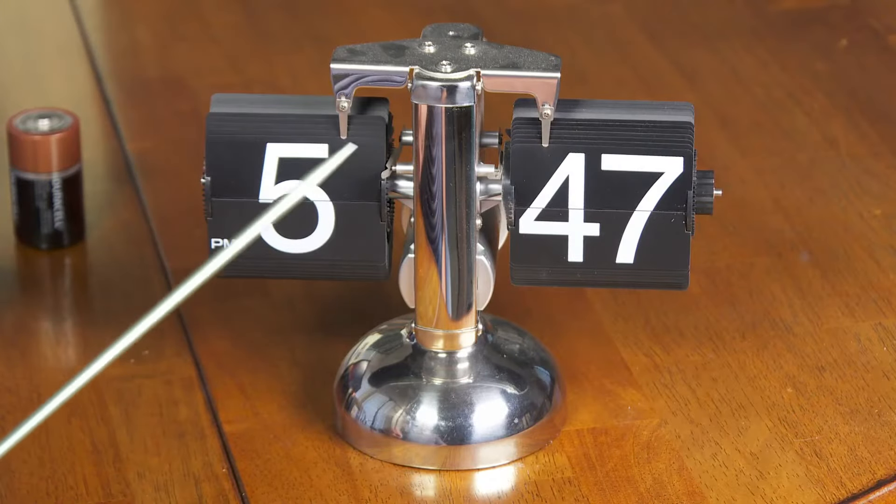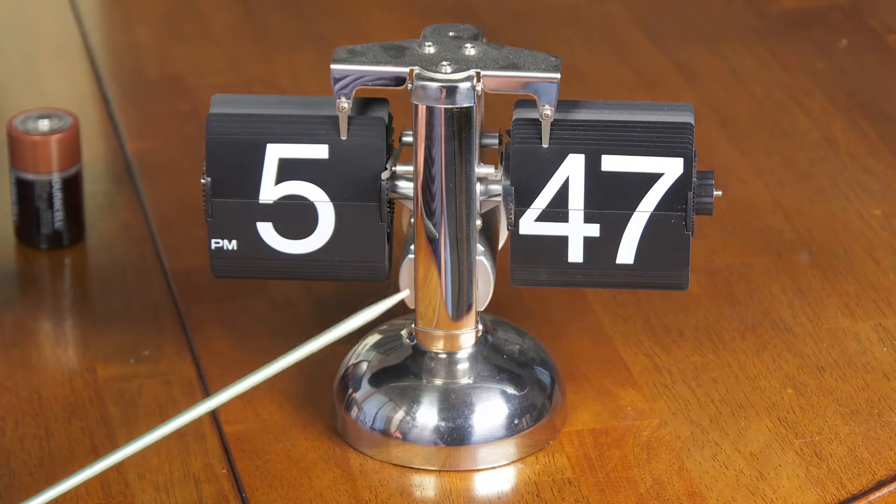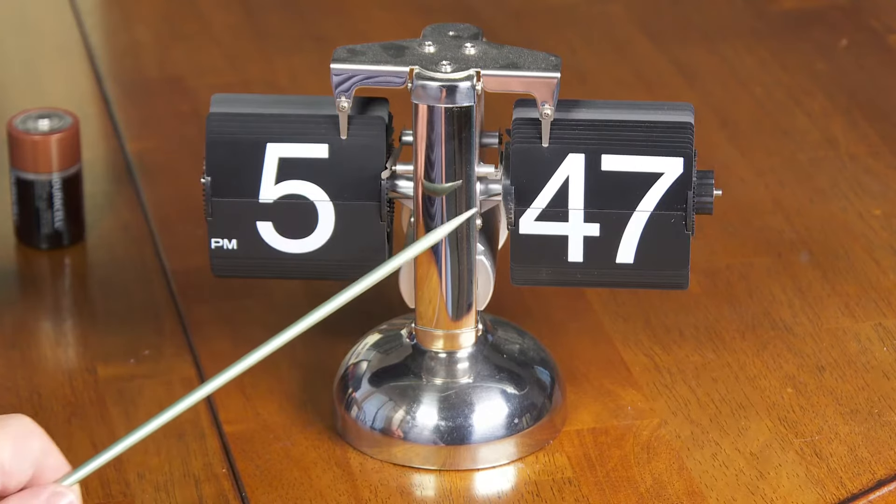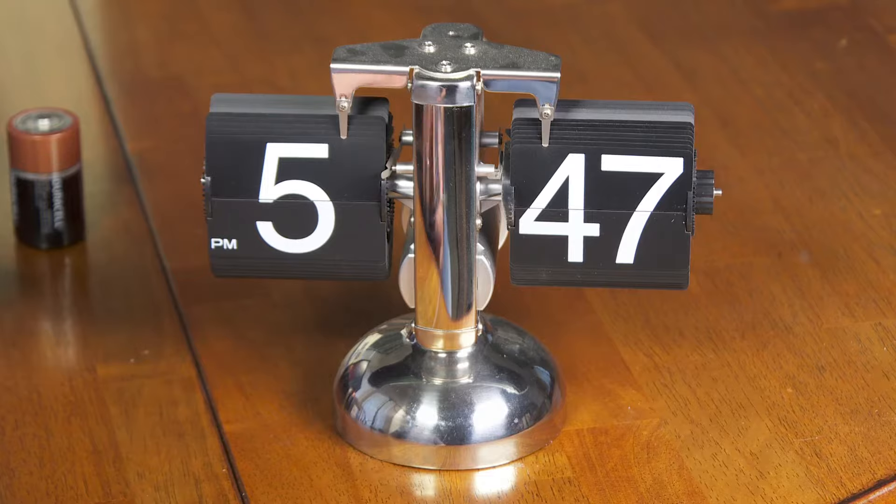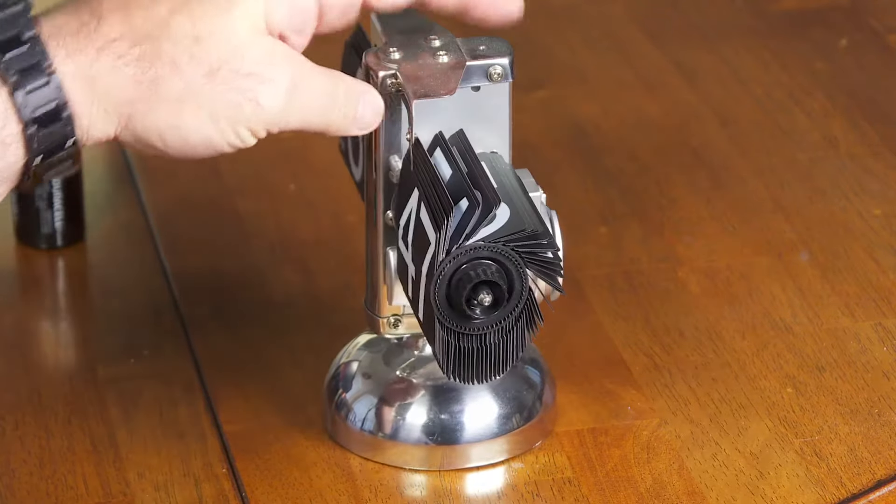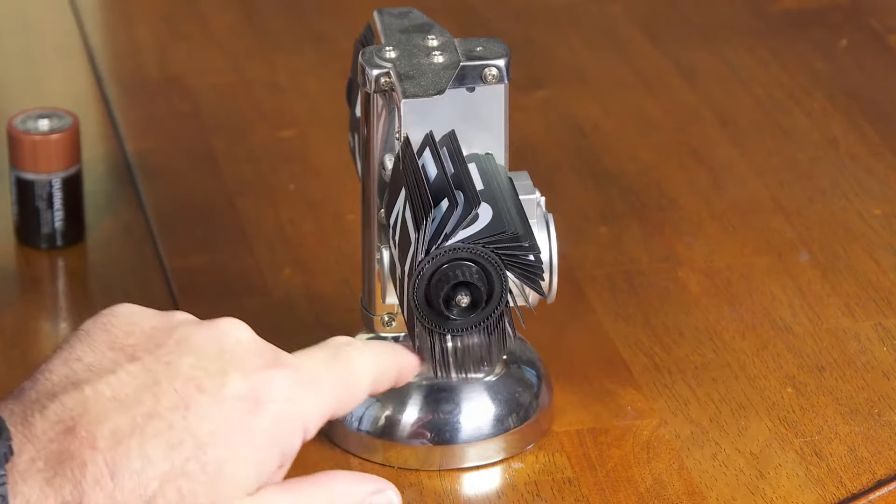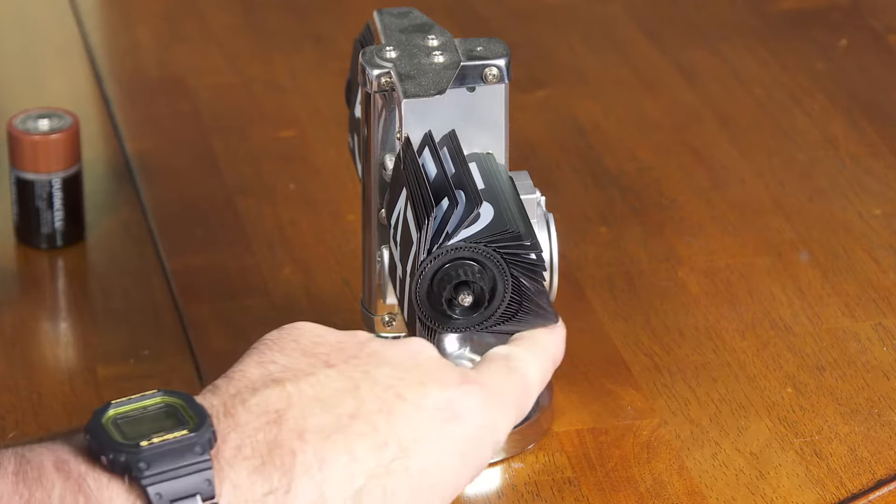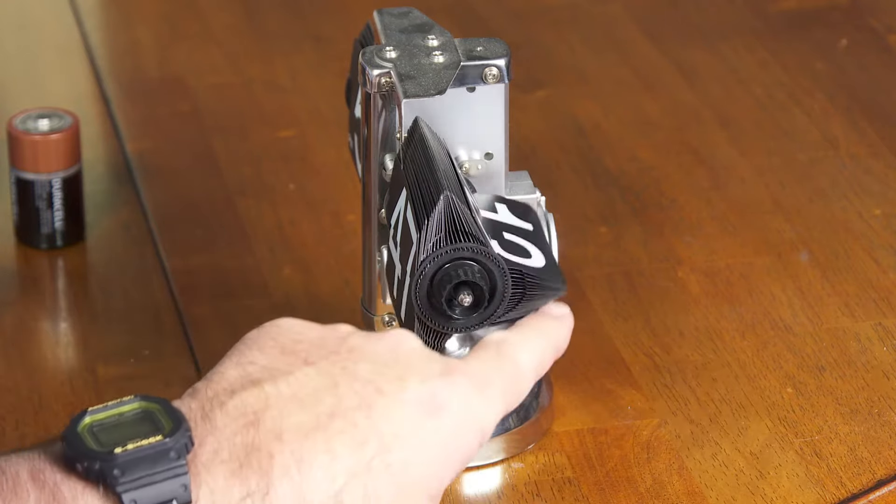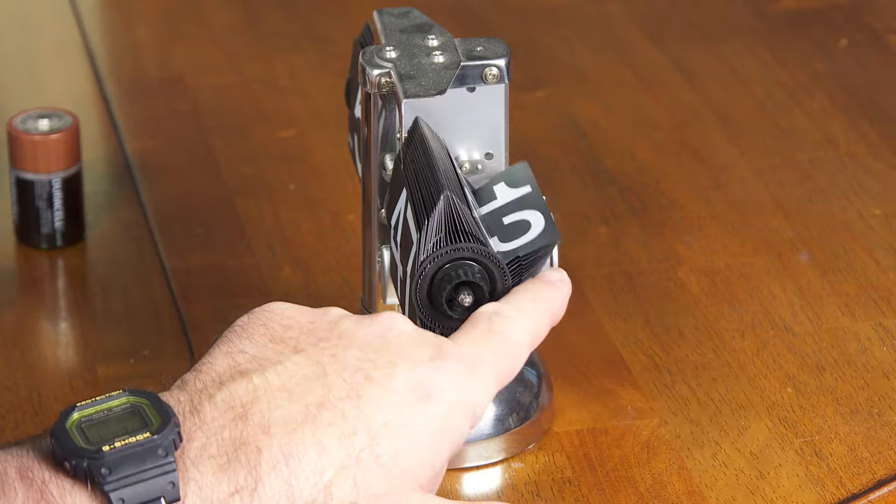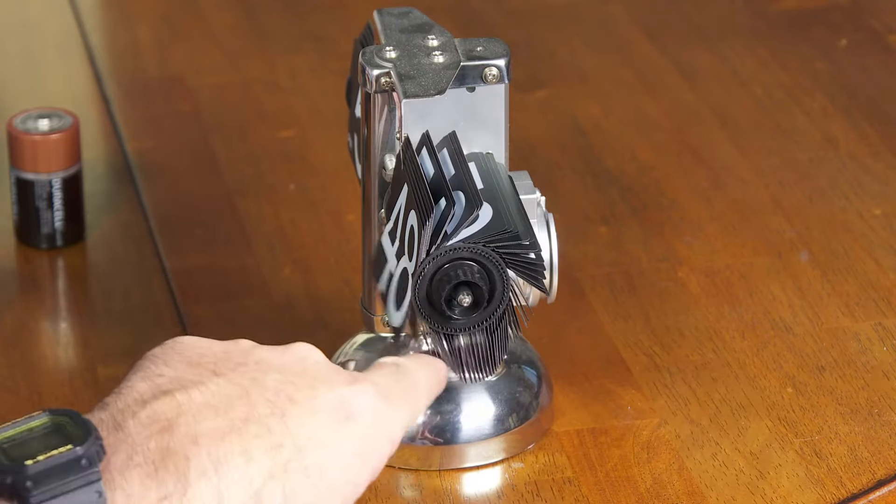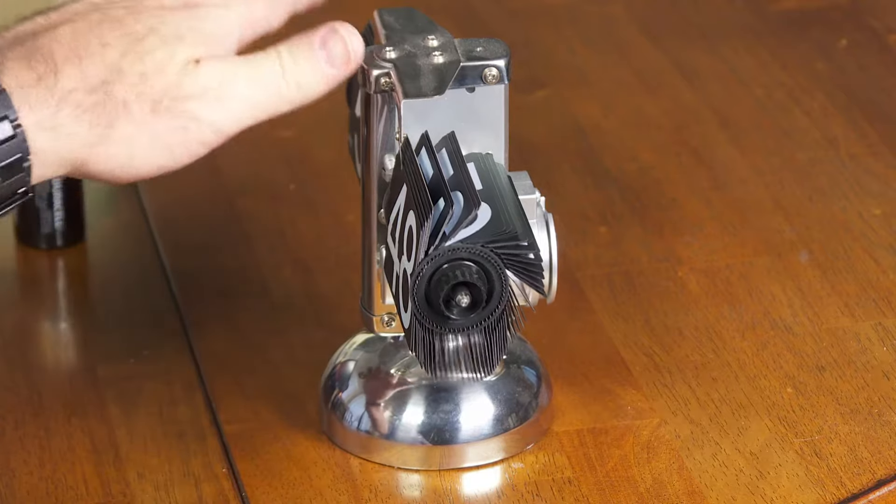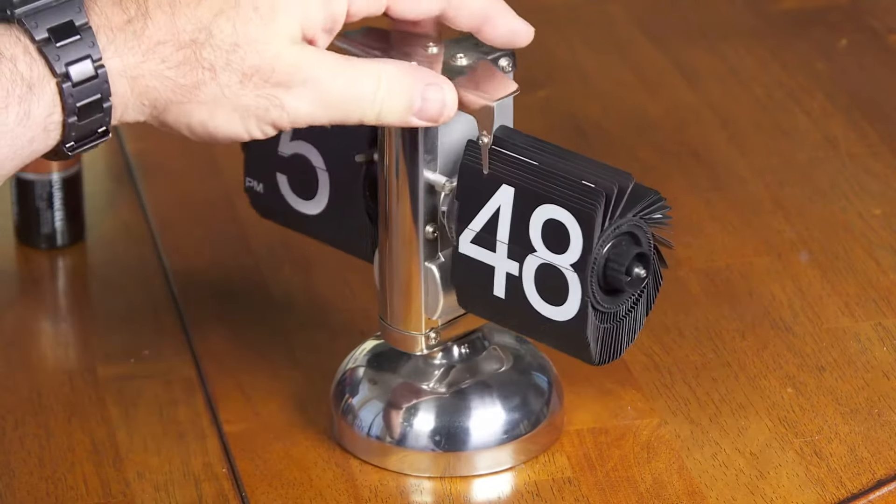So this is generically referred to as a flip clock. And I first saw these maybe in the mid to late 1970s. But the ones that you saw in the 70s were a little bit different than this. They were kind of enclosed inside a box so that all these little panels, all these little flimsy little cards here were not exposed like this. You couldn't do this with your fingers and potentially damage them or knock them out of place somehow.